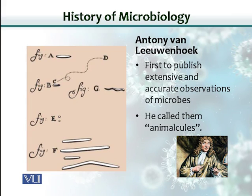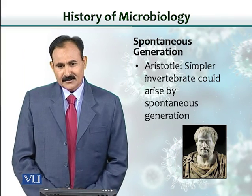Similarly, when we study the history of microbiology, another scientist, Antonie van Leeuwenhoek, was basically the first who published the morphology of microorganisms. He called them animalcules — small animals.